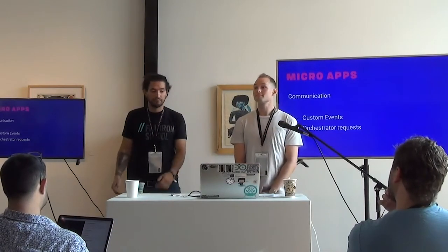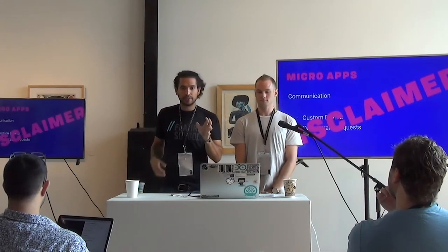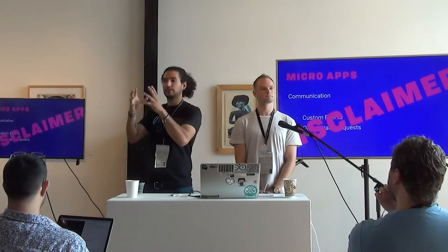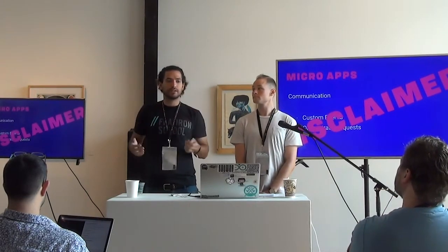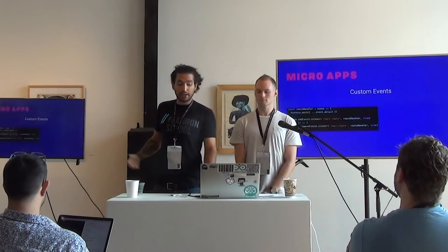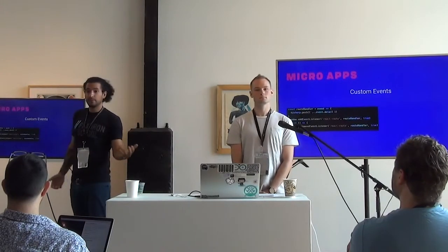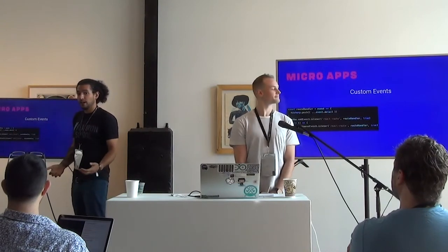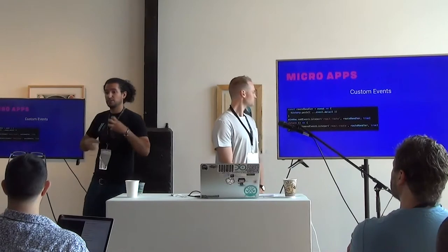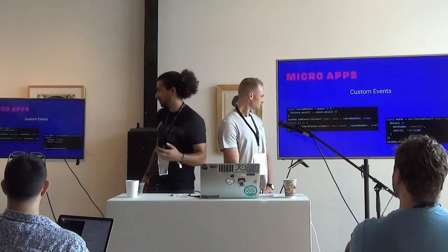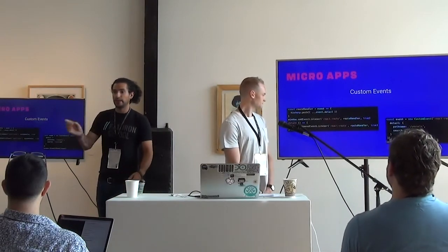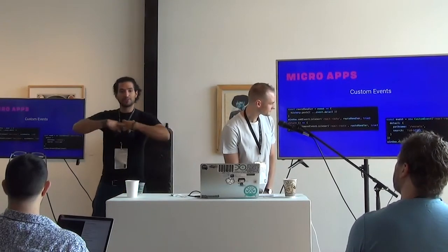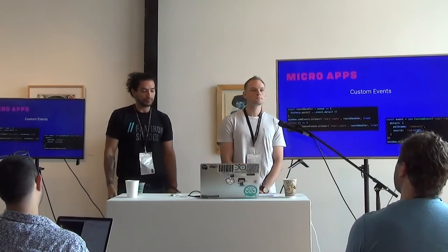You can also use the orchestrator to facilitate communication between apps. But I want to throw this disclaimer out: micro apps shouldn't be talking to each other that much — that defeats the purpose. They're supposed to be independent and isolated, each targeting their own business domain. If you find yourself needing a lot of communication between them, you may not be architecting it correctly. But you can do it if you have to. The React app, for example, listens for a custom event called 'React Route.' When it fires, it just pushes to the history. The Vue app dispatches that custom event with routing information, leveraging the fact that they're both running in the same browser.